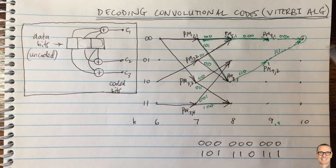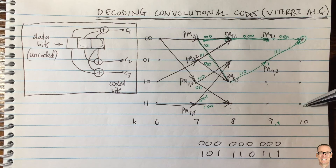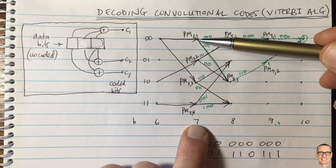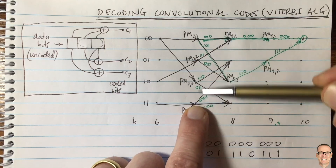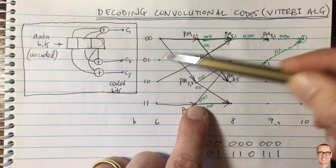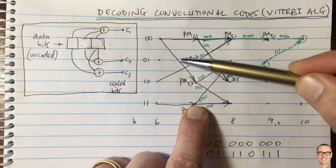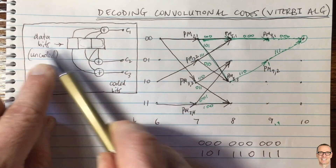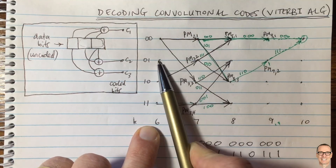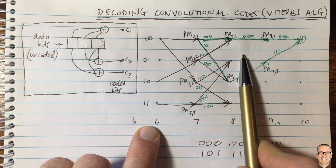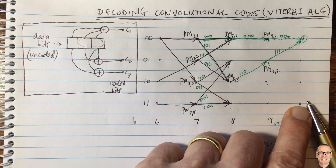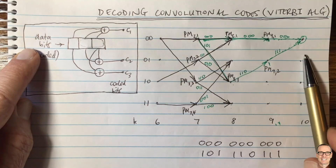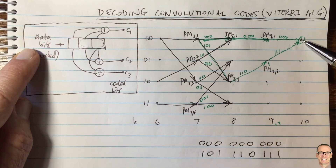Finally, when the algorithm reaches the end of the data, it does have to make a final choice among the surviving paths. Typically you end your data sequence with all zeros so that you know you'll end up at state 00. In this example, nothing came from that state onwards, meaning the Viterbi algorithm has decided that path didn't survive.